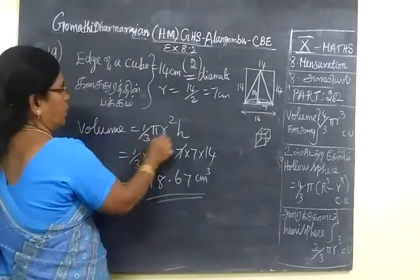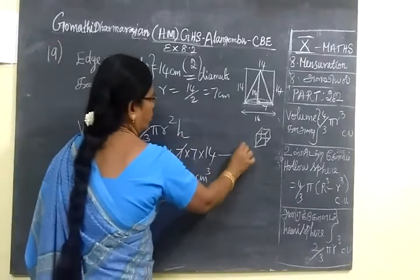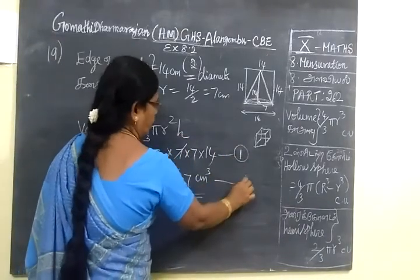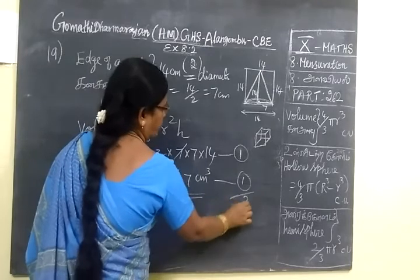Then you write a formula. You have your substitution - 1 mark. Then for the answer, 1 mark.